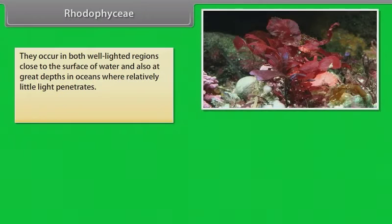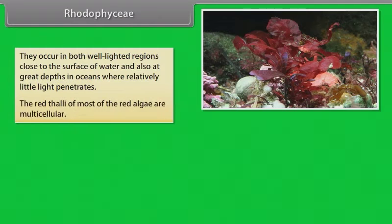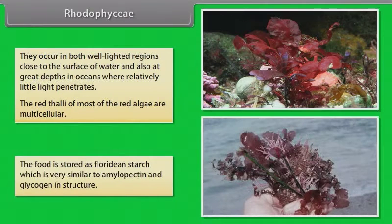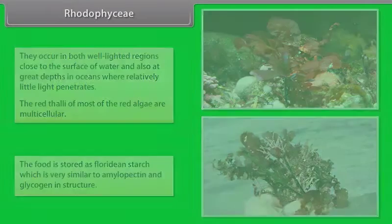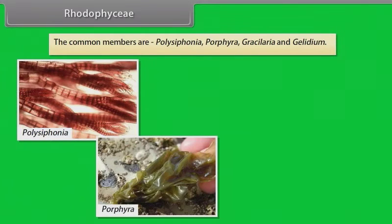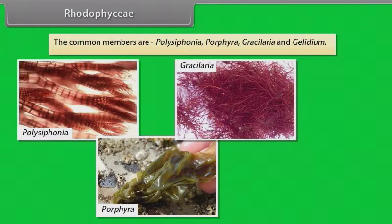They occur in both well-lighted regions close to the surface of water and also at great depths in oceans where relatively little light penetrates. The red thalli of most of the red algae are multicellular. The food is stored as floridean starch which is very similar to amylopectin and glycogen in structure. The common members are Polysiphonia, Porphyra, Gracilaria, and Gelidium.